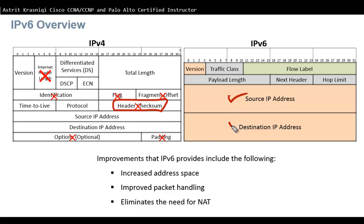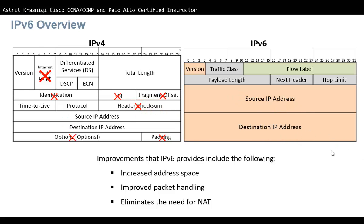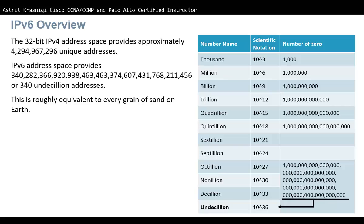The next fields are Source IP Address and Destination IP Address — the same as IPv4 — but in IPv4 each is 32 bits, providing approximately 4.3 billion addresses. Not all of those are usable since many are reserved, which is not enough for the internet's needs.